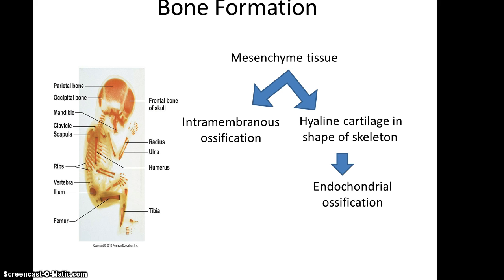Bone formation can occur in two main pathways, and this begins way back when we were embryos inside our mother's womb. Mesenchyme tissue will eventually become bone tissue. The mesenchyme tissue can be turned into bone through intramembranous ossification, or it can differentiate into hyaline cartilage in the shape of the skeleton, and then that hyaline cartilage will undergo endochondral ossification.